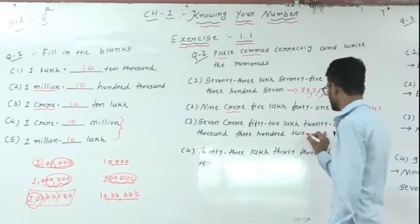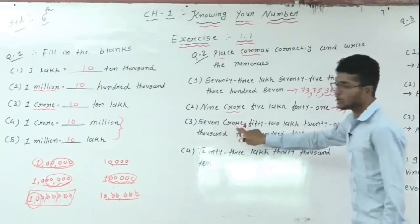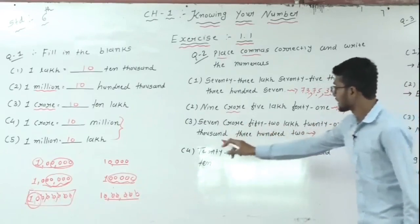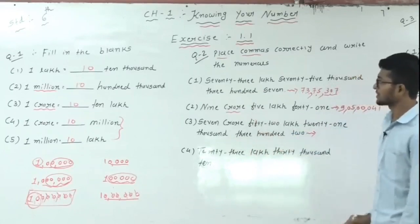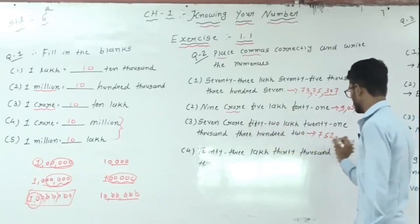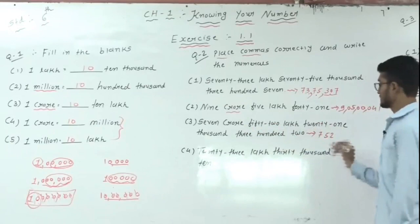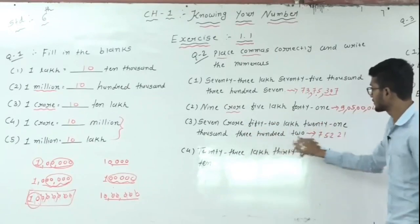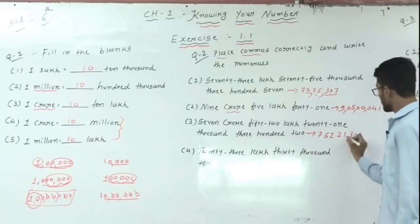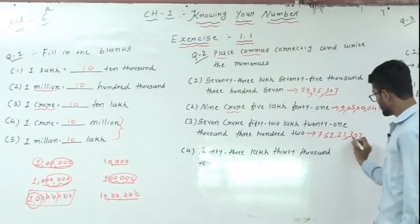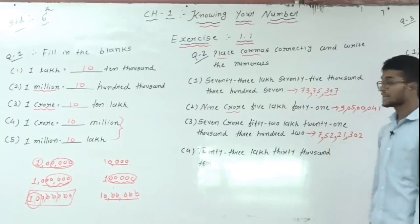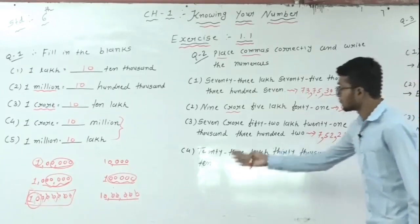Same for the third: 7 crore 52 lakh 21,302. This is also Indian system. Write down 7, then 52, then 21, then 302. In Indian system: first 3 digits, comma, then 2 digits, comma, then 2 digits, comma. So the answer is 7,52,21,302.